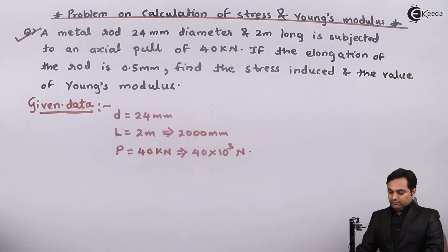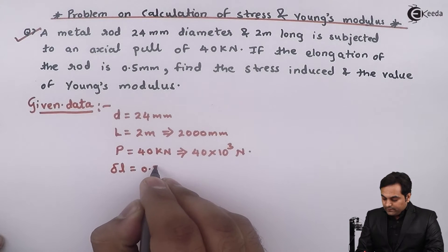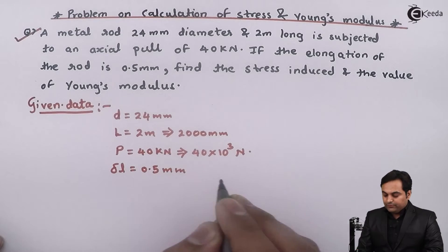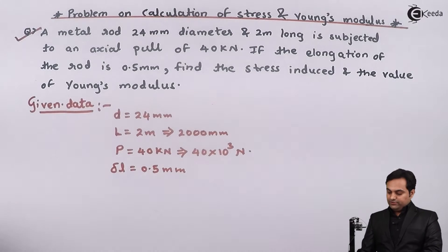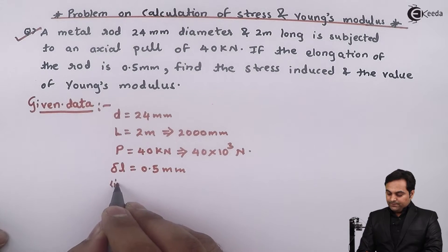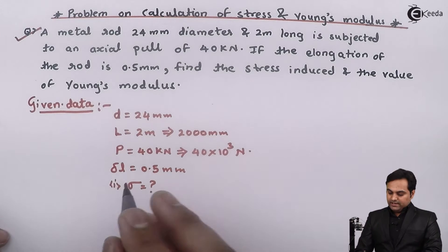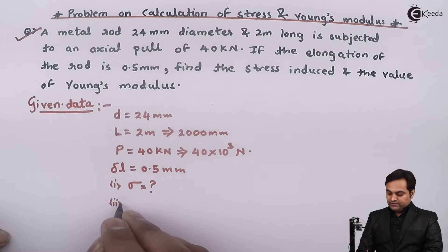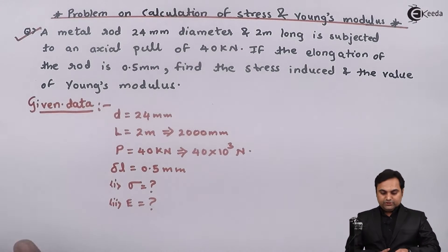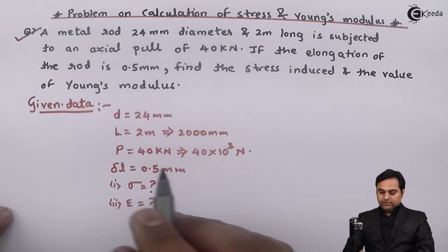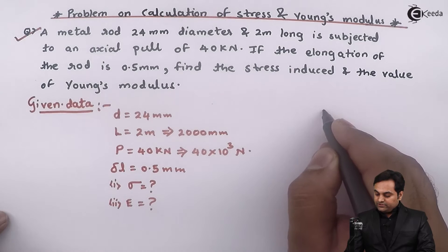The elongation, denoted by delta L, is 0.5 mm. We need to calculate the stress induced, which is sigma, and the value of Young's modulus, denoted by capital E. For this question, I'll draw a diagram since it is given that there is a metal rod with a circular cross-section.